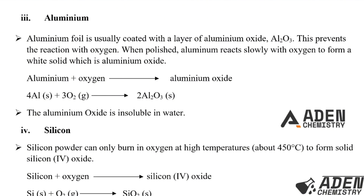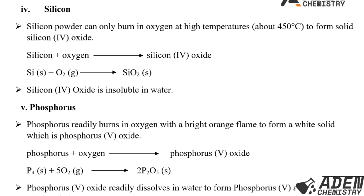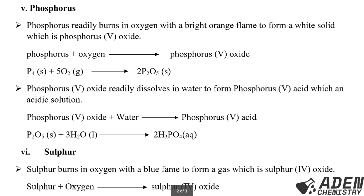Aluminium oxide is insoluble in water. The fourth element in period 3 is silicon. Silicon powder can only burn in oxygen at high temperatures of about 450 degrees Celsius to form solid silicon dioxide. The word equation: silicon plus oxygen gives silicon dioxide. The balanced equation: silicon (solid) reacts with oxygen gas giving silicon dioxide (solid). Silicon dioxide is insoluble in water.